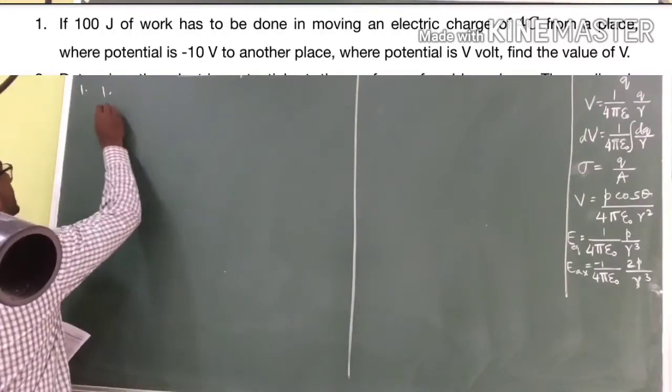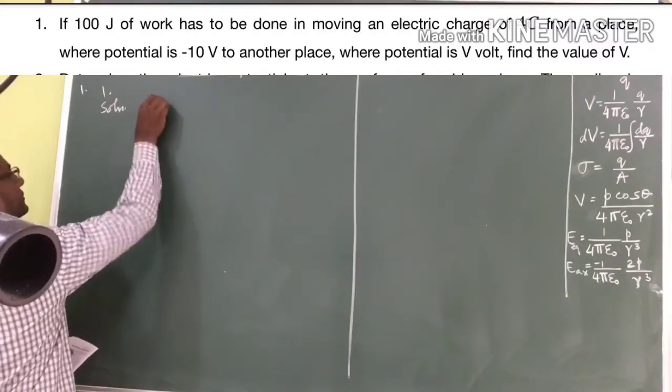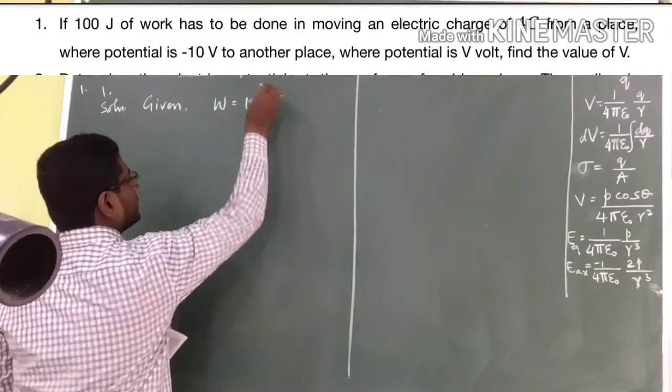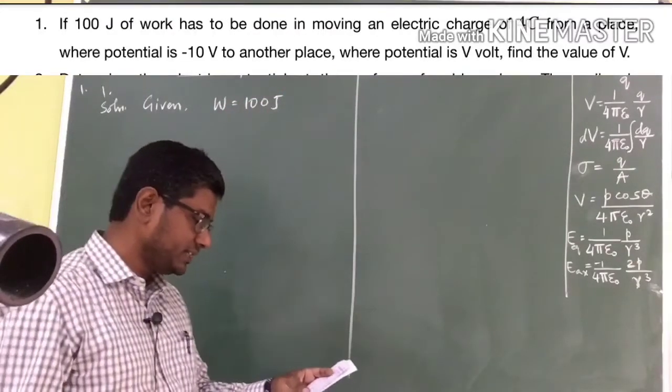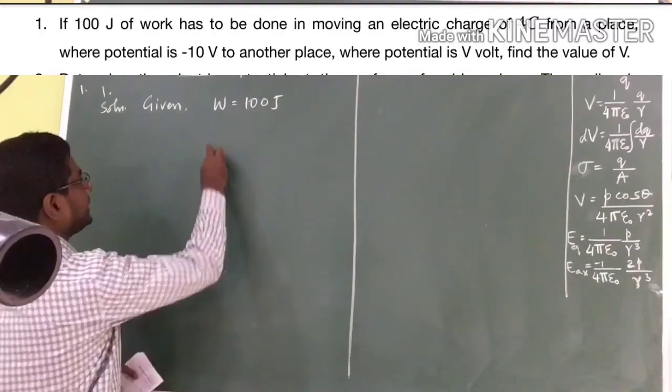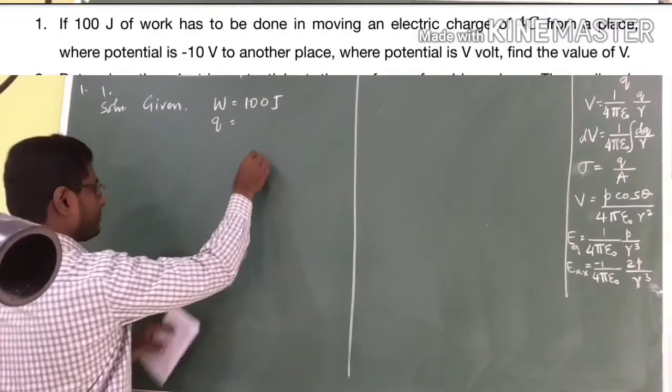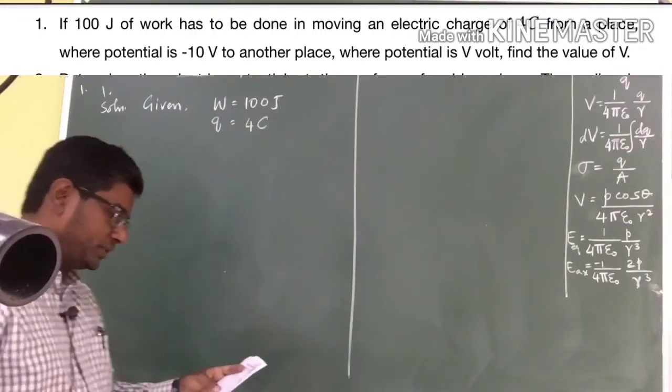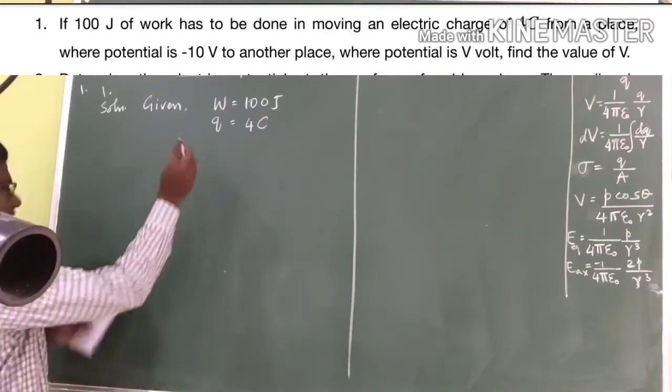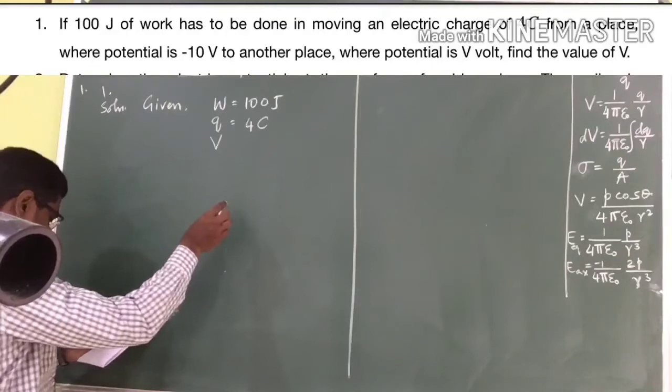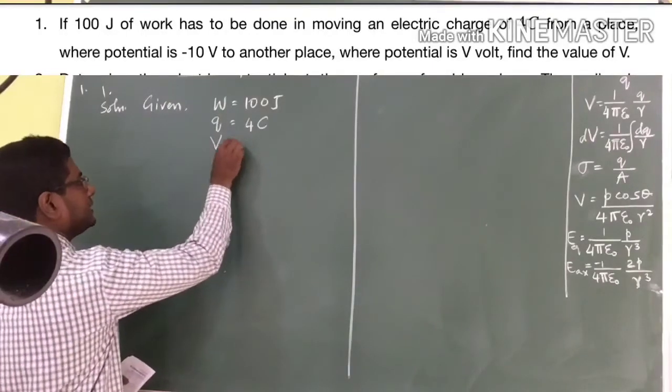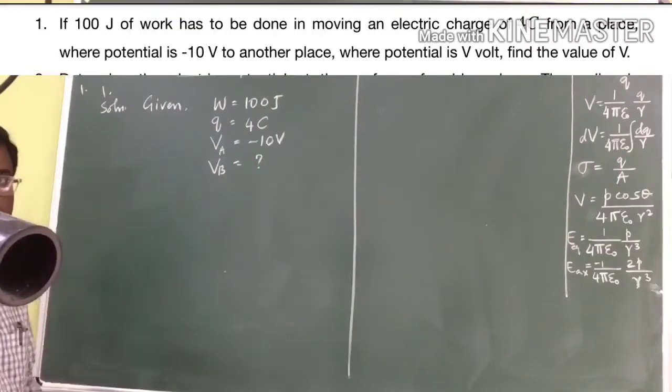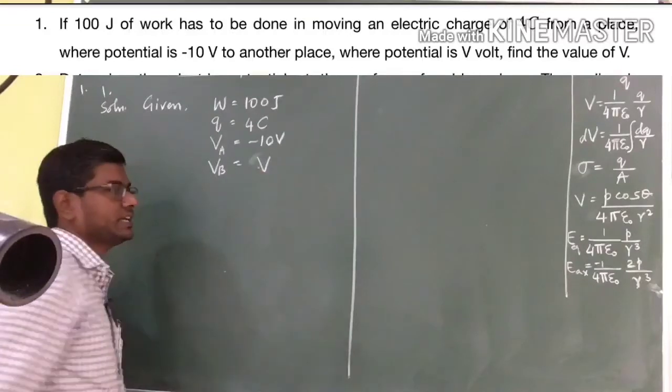What are the given quantities? Work is given, so W equals 100 joules, that is in SI unit, no need to tackle with it. Next is charge, in moving a charge, charge is Q equals 4 coulomb. Then, from a place where the potential is minus 10 volt. I can take it as V1 or VA, any one of the potential I can take. I can take it as VA equals minus 10 volt, VB is the unknown quantity. That is the value of the V which we have to find. I will just put that as V.